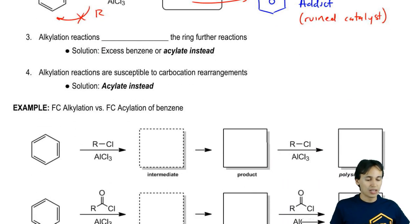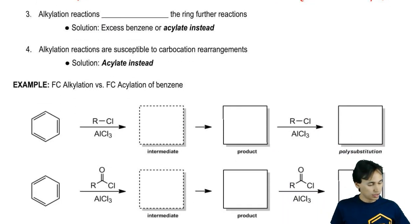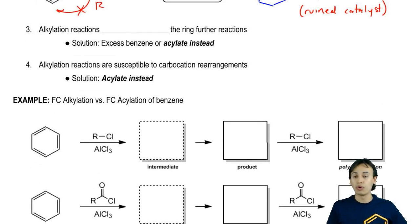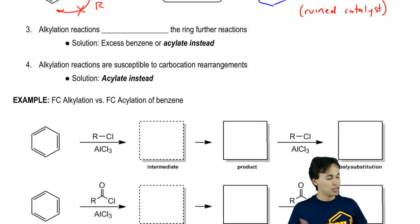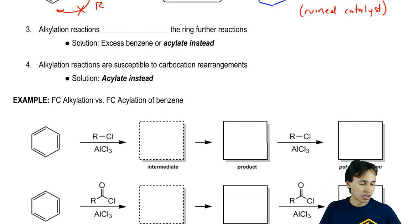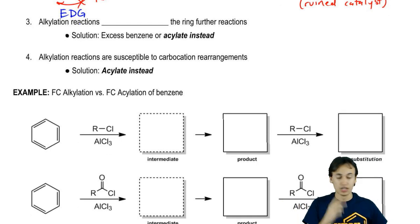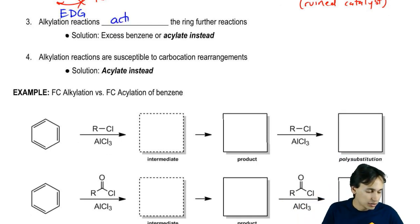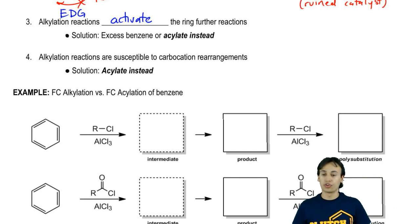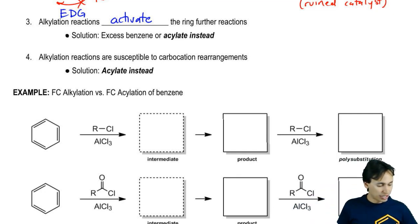It turns out that alkylation reactions, because we learned that R groups are electron-donating groups, they're going to activate the ring towards further reactions. So when you add that first R group, it's going to make it more reactive for the second reaction.